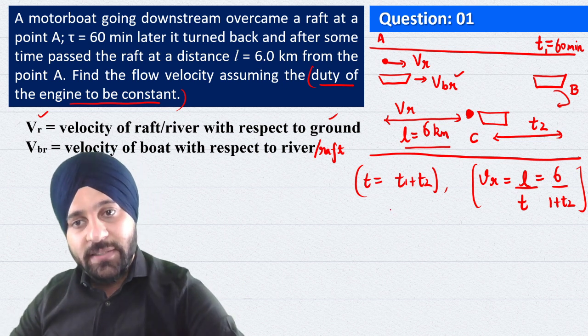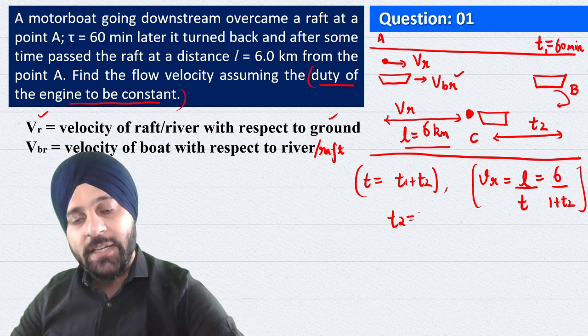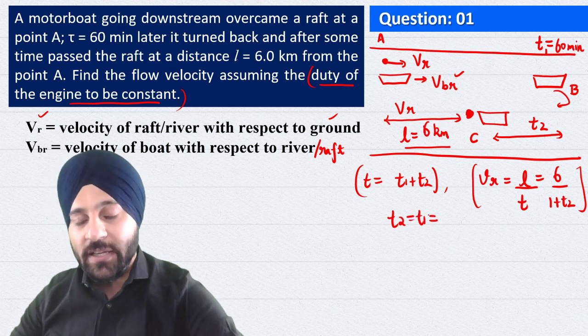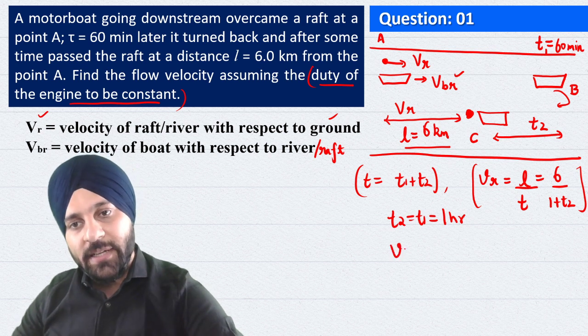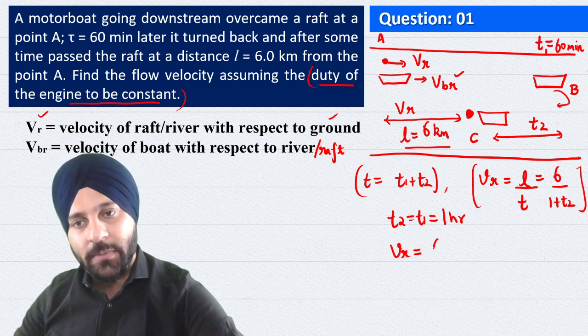Dhyan se socho is bare me. Iska matlab kya hai? T2 hamara T1 ke equal hoga aur wo bhi kitna hoga, 1 hour. To iska matlab hai velocity of raft is nothing but 6 divided by 1 plus 1, aur ye kitna ho jaega 3 km per hour.